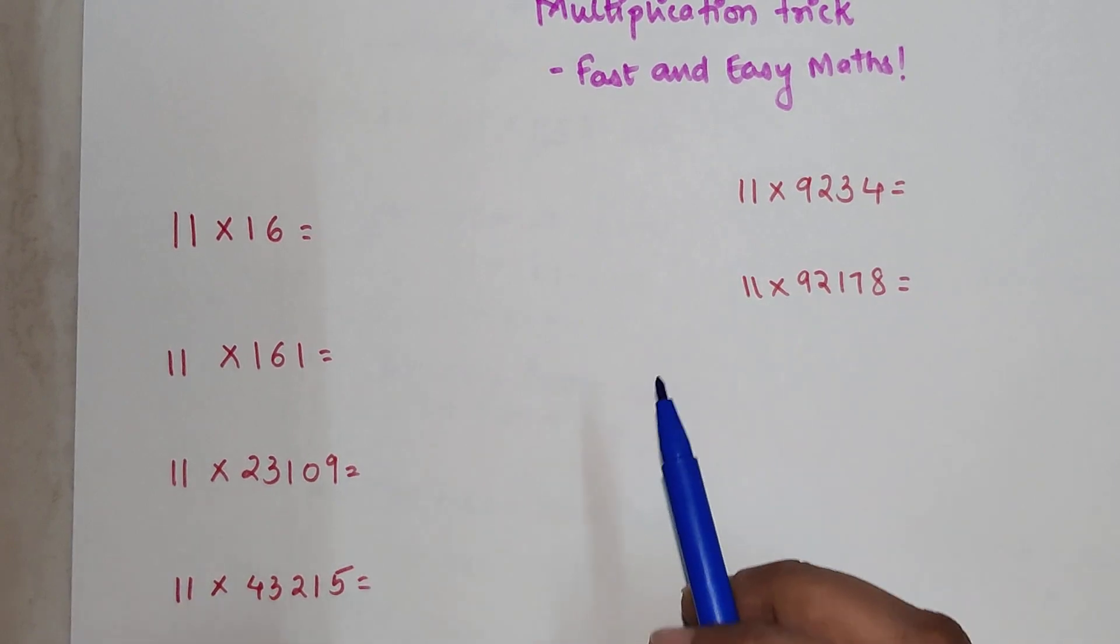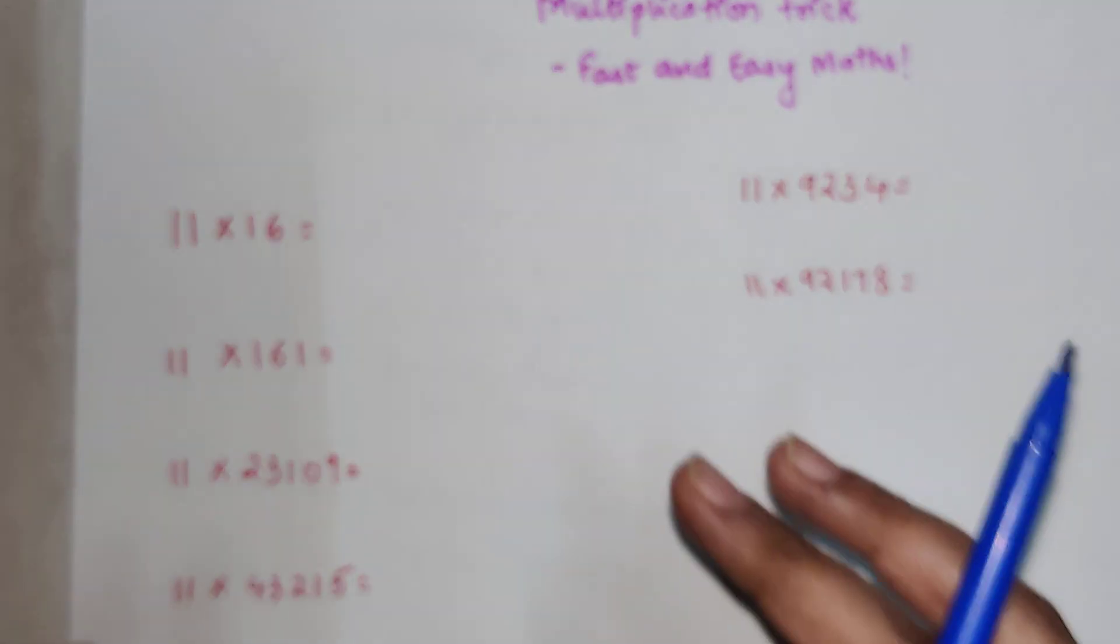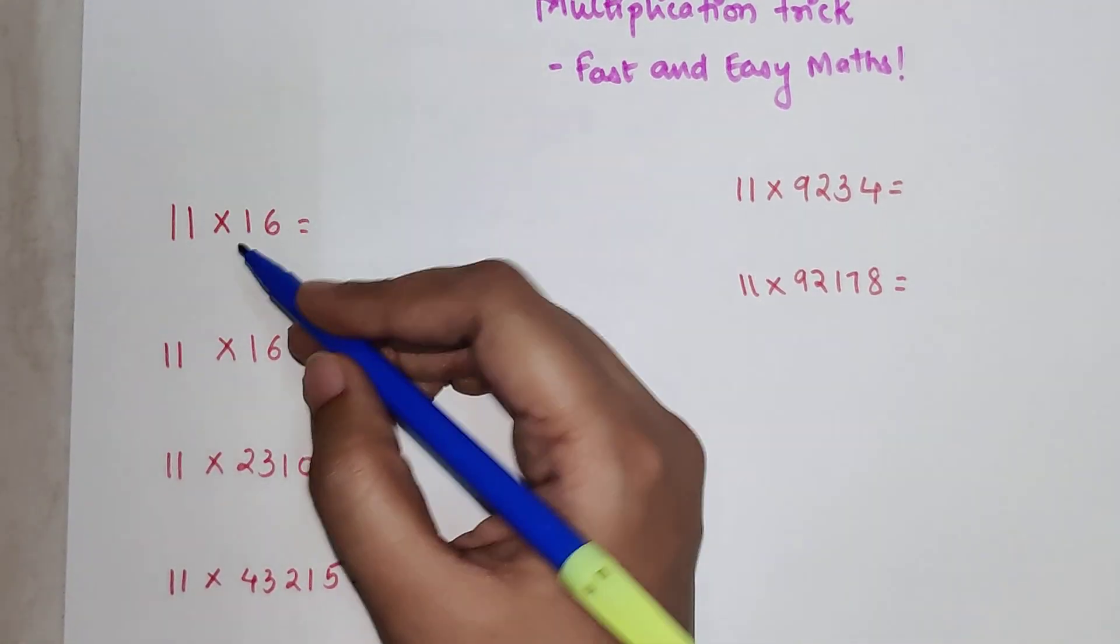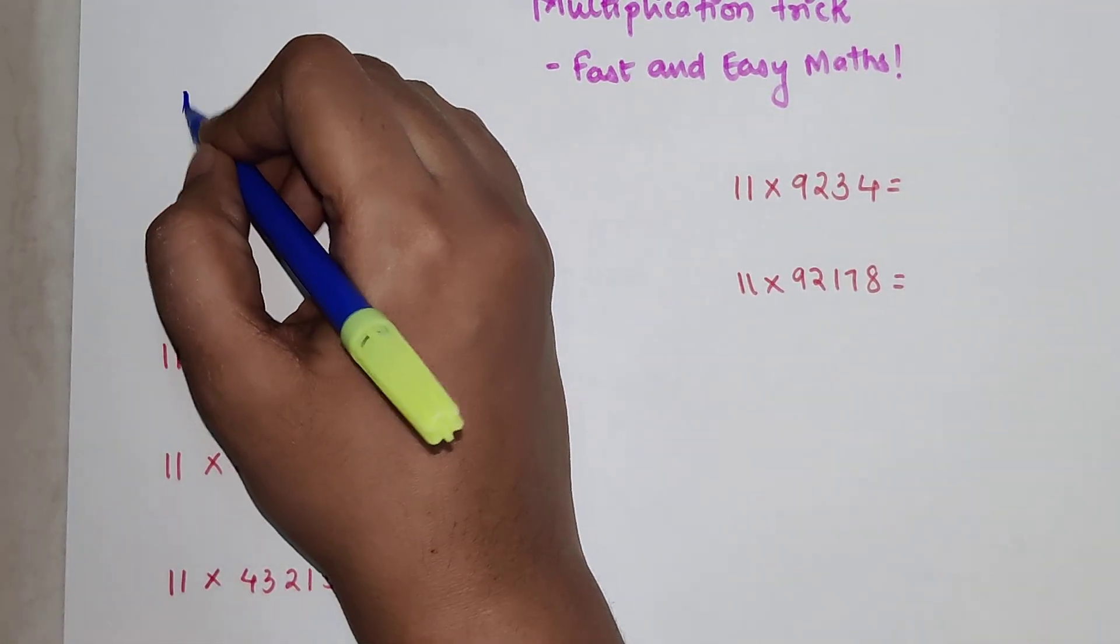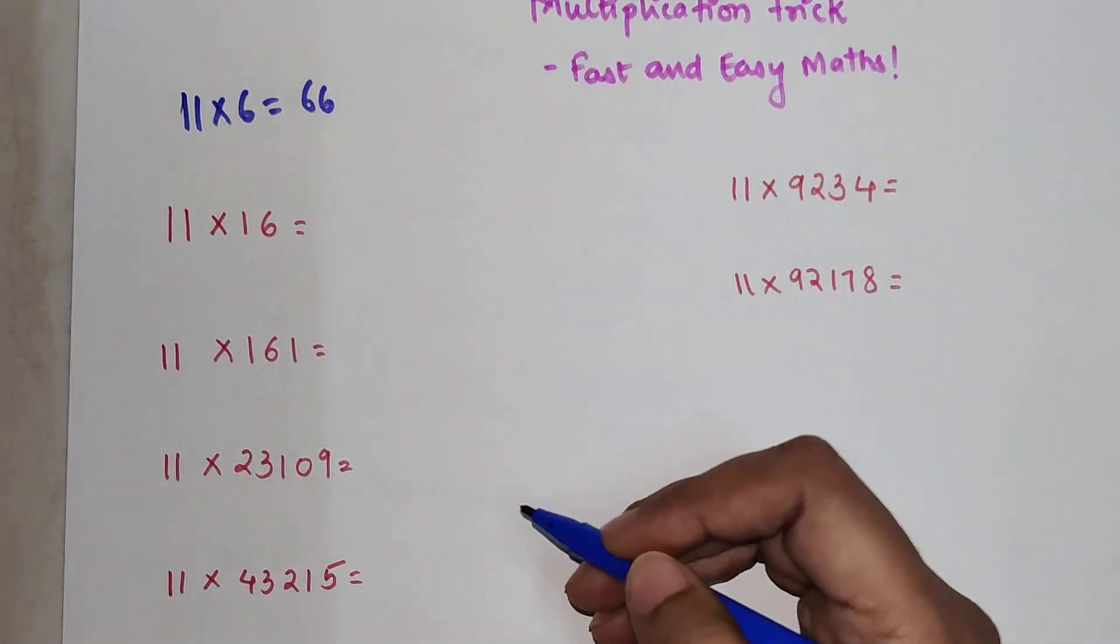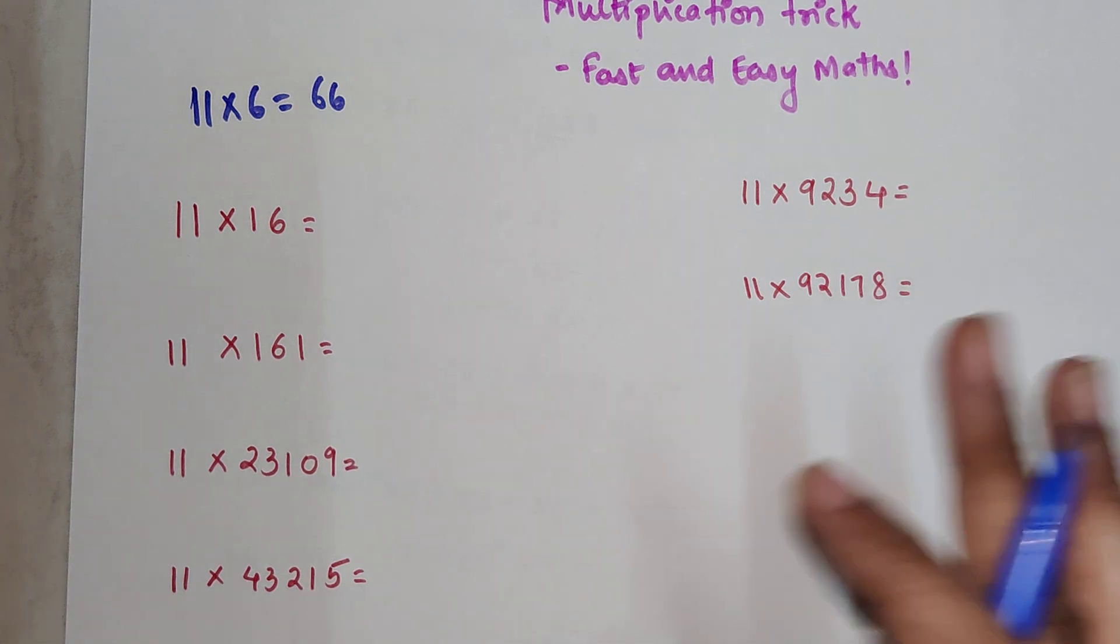Trust me, after learning this particular trick you will be able to do multiplication of any number with 11 in a matter of seconds. So without wasting further time, we all know 11 into 6 is 66, right? 11 into any single digit is very simple for us to understand.